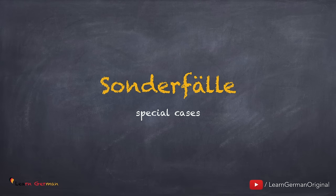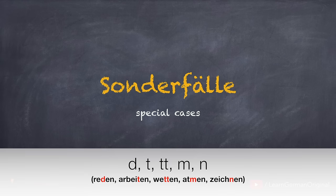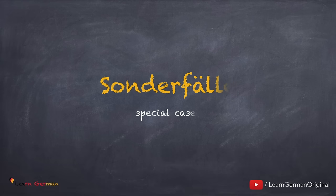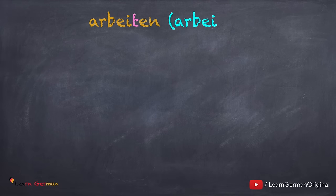Aber es gibt ein paar Sonderfälle. Die Verben, deren Stamm mit d oder t oder tt oder m oder n enden, nehmen ein extra e zwischen Stamm und t. When the stem of the verb is ending with these endings, then the verb takes in Präteritum an extra e between the stem of the verb and t. Das erste Verb ist arbeiten. Im Präteritum arbeitete. Hier endet der Verbstamm arbeit mit t.